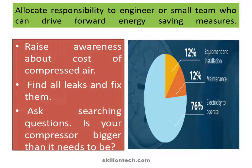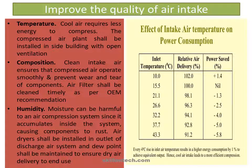Allocate responsibility to an engineer or small team who can drive forward energy saving measures in the industry. Raise awareness about the cost of compressed air. Find all leaks and fix them. Ask searching questions — is your compressor bigger than it needs to be? In a diagram showing installation, operation, and maintenance cost of a compressed air plant, we can see 12% is the cost of equipment and installation, 12% is spent on maintenance, and 76% cost is electricity to operate.